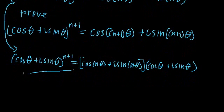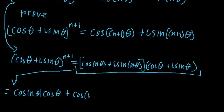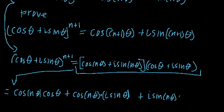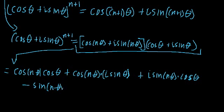So let's expand the right hand side. We're going to write that this is equal to cosine of n theta times cosine theta, plus cosine n theta times i sine theta, plus i sine n theta times cosine theta, plus i sine n theta times i sine theta — which equals i squared, that is negative 1, times sine n theta times sine theta.